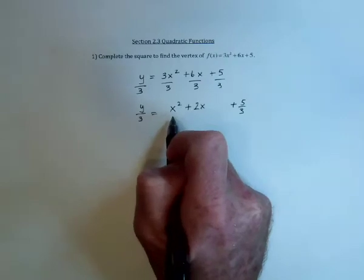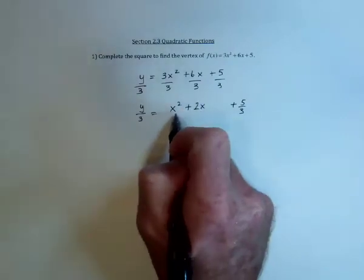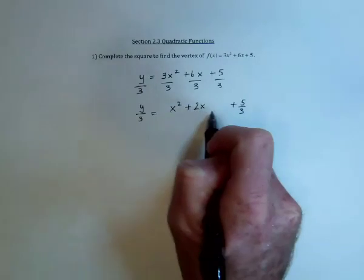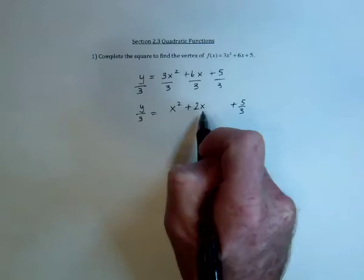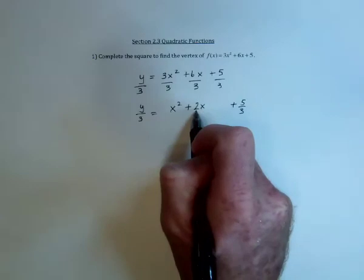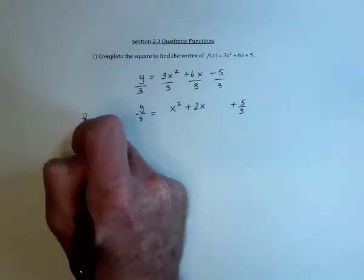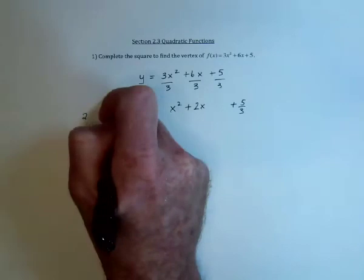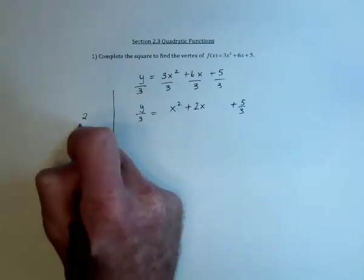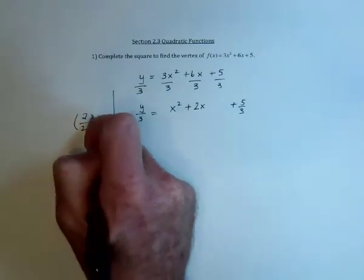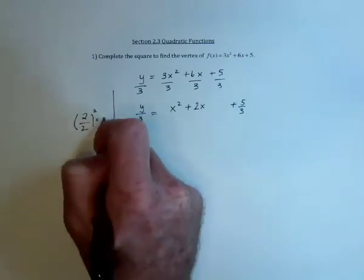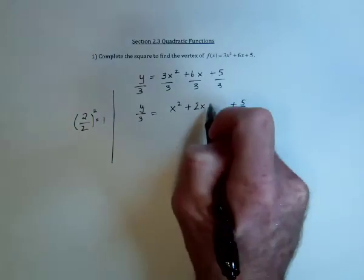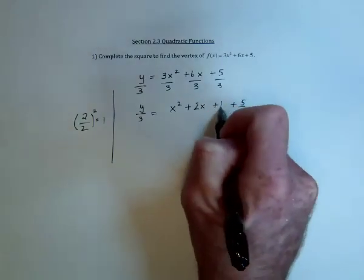The next idea is that we need to be able to factor this into a perfect square. There's a number that's missing, and to figure out what number is missing, we take this, the coefficient of x, cut it in half, so I'll work over here on the side, cut it in half and square the result. That's going to be 1 squared, or 1. So then add 1 in right here.